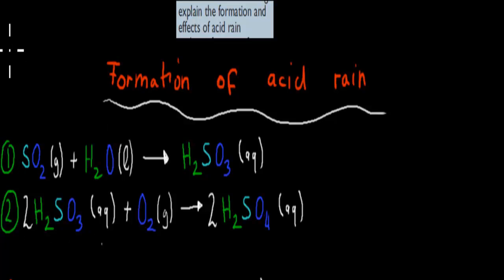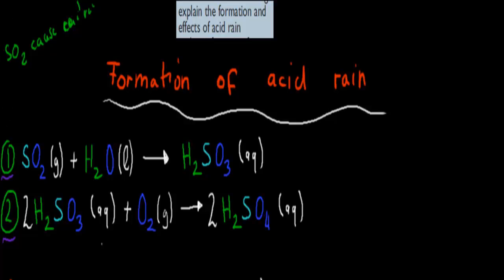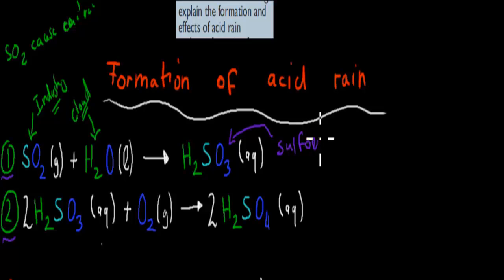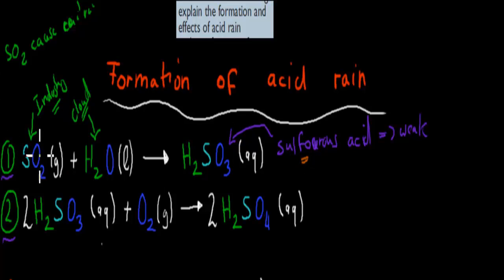The first thing I'll go through is how sulfur dioxide causes the formation of acid rain. Sulfur dioxide could have come from industry — maybe iron smelting, copper smelting, or the burning of coal — releasing sulfur dioxide into the atmosphere. Then at the clouds, it comes in contact with water. Once these two come together, they react and produce sulfurous acid, H2SO3.